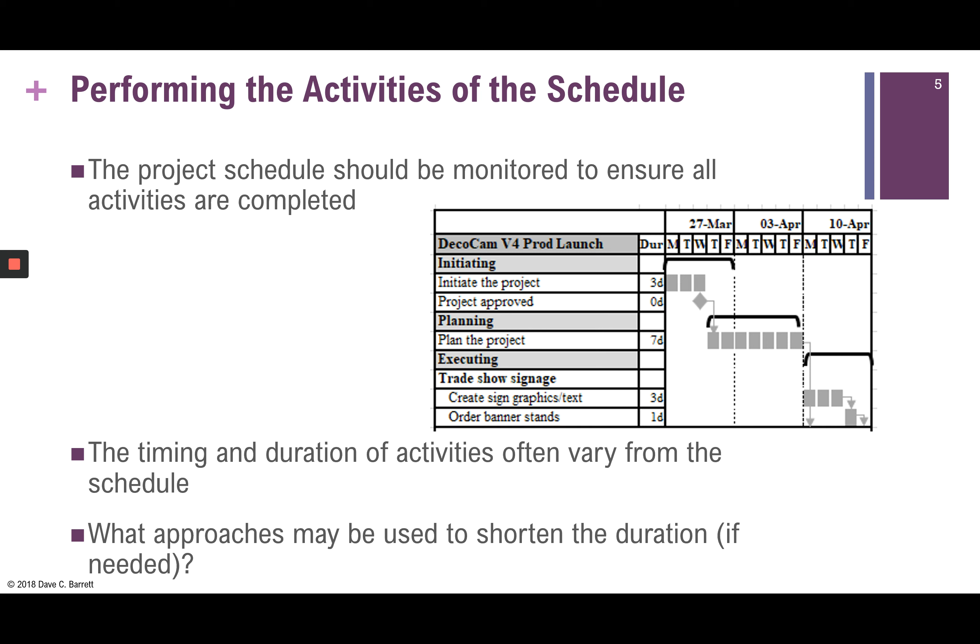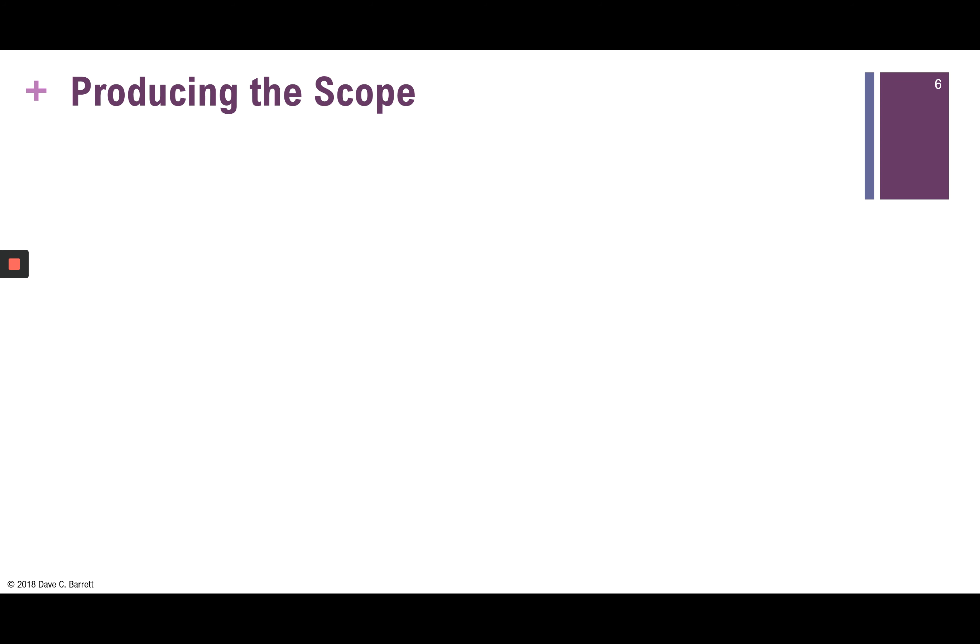Another option — though it can be difficult for the project sponsor — is to reduce the scope of the project, which would require sponsor approval. If there is less scope to produce, it can be done faster. So there are various approaches available to recover the schedule.